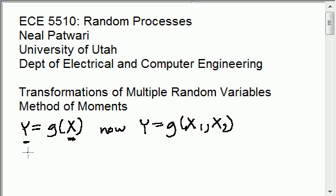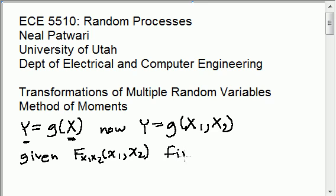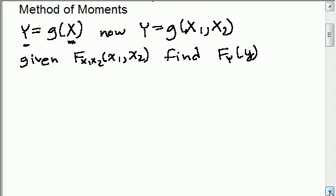The way that we're going to do this is one of two ways, either using the method of moments or the Jacobian method. So we're going to be given the distribution of X1 and X2. Here I'm going to write the joint CDF, F of X1 and X2. And we're going to be asked to find F of Y, the CDF of Y. We might also be asked to find the PDF of Y, but once we have the CDF we can find the PDF.